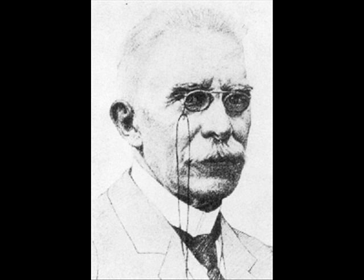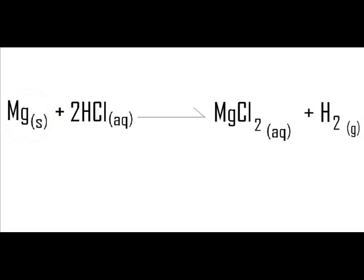To this point in our study in chemistry, we have been concerned with chemical reactions that go to completion, that is, when all the reactants have been turned into products. For example, if one mole of magnesium was added to two moles of hydrochloric acid, all the reactants will have turned into products, hence the reaction having gone to completion.